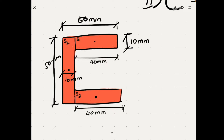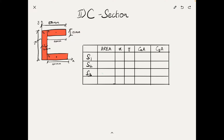The next step is to get the X and Y coordinates of each centroid. We assume an imaginary reference axis along the edge of the section — this will be the Y-axis and this the X-axis. The X coordinate for Section S1 is 30, and the Y coordinate is 45. For S2, the X coordinate is 5 and the Y coordinate is 25 (exactly at the middle). For Section 3, the X coordinate is 30 and the Y coordinate is 5.